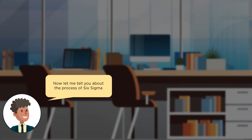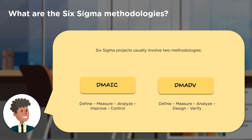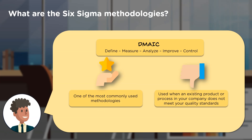Now let me tell you about the process of Six Sigma. Six Sigma projects are of basically two methodologies: DMAIC and DMADV. DMAIC is short for Define, Measure, Analyze, Improve, and Control. This is one of the most commonly used methodologies in the world, commonly used by companies when they have to fix or improve an already existing product or process that does not meet company standards.